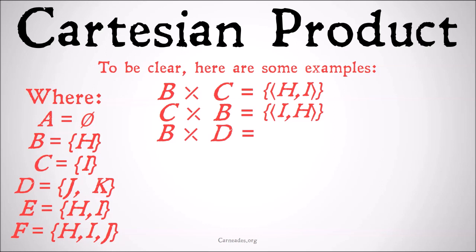The Cartesian product of B and D is going to be the class of the ordered pair H, J and the ordered pair H, K. So the one member of B is paired with each and every member of D to get us a class with two members, both of them ordered pairs.